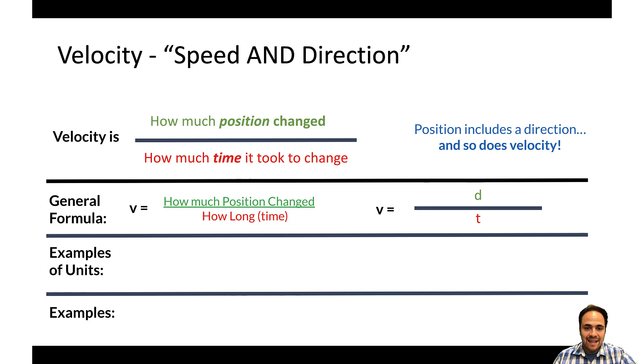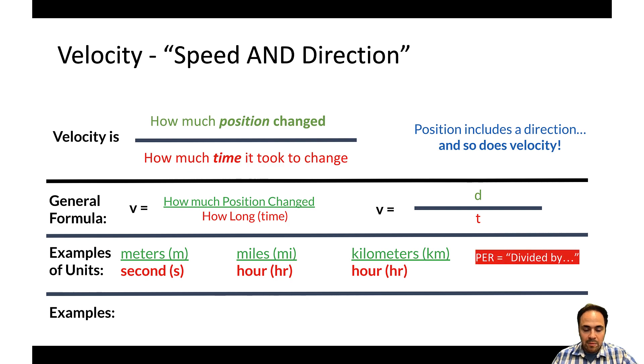Examples of units would be a unit of distance divided by unit of time. So meters divided by seconds, or miles divided by hours, or kilometers divided by hours. Typically when we refer to these units, we say meters per second, or miles per hour, or kilometers per hour. It's important to note that when we say per, that's like saying divided by. So miles divided by hours is miles per hour, or meters divided by seconds is meters per second.